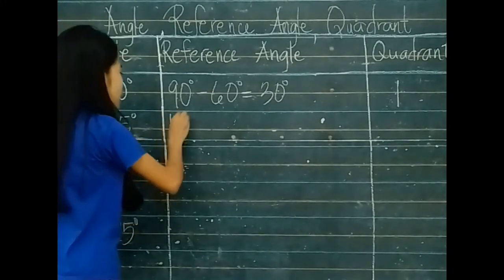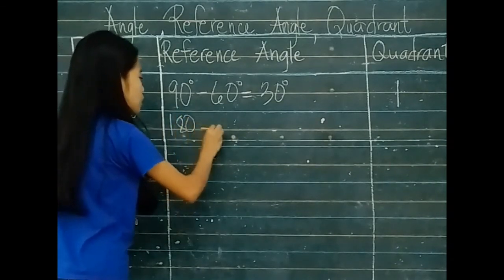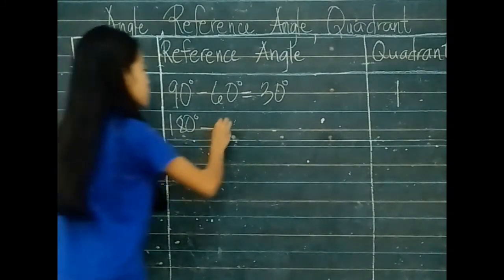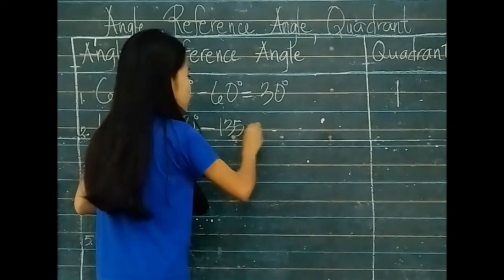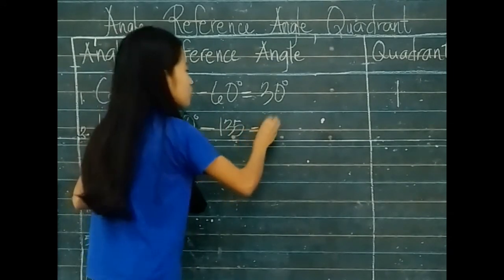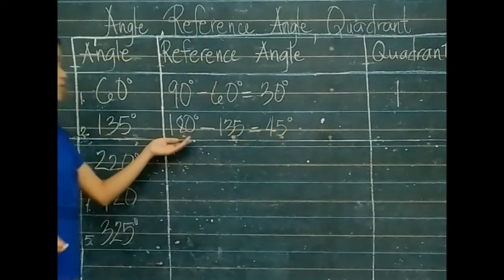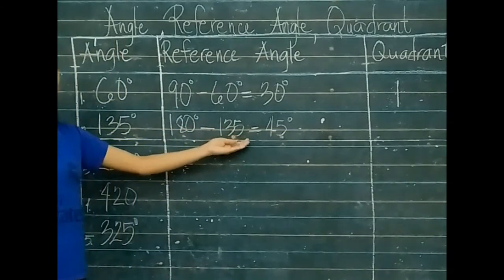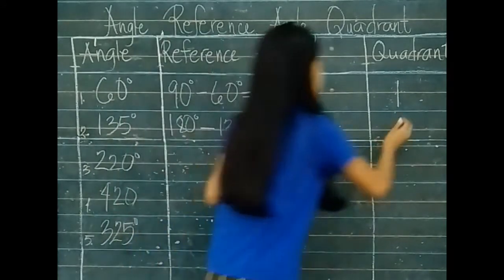Next, for 135 degrees: 180 degrees minus 135 degrees is equal to 45 degrees. So 135 degrees belongs to Quadrant 2.